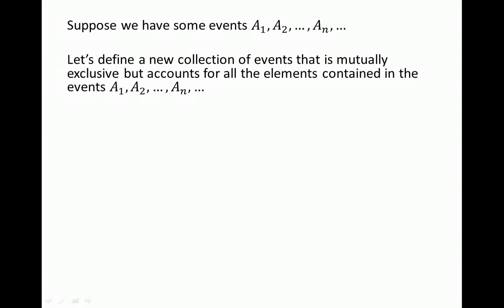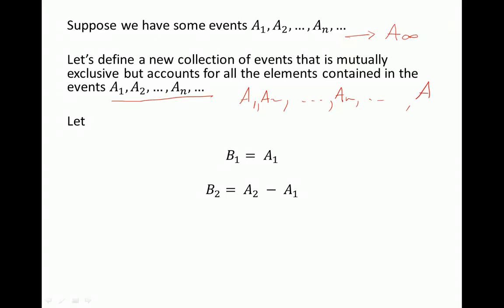Suppose we have some events A1, A2, ... An to infinity — an infinite number of events. We define a new collection of events that is mutually exclusive but accounts for all the elements in our original sequence. Mutually exclusive means that no two of these events can happen at the same time, i.e., they don't intersect. Let's define the sequence B1, B2, ... Bn to infinity.